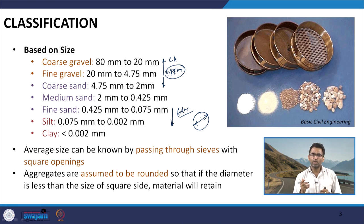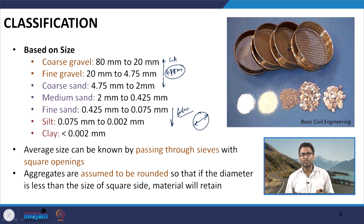Usually we describe sizes based on two sieves: a larger and the next standard size. For example, if we have a 20 mm sieve and the next standard is 12.5 mm, an aggregate passing 20 mm and retained on 12.5 mm has an approximate average size of (20 + 12.5) / 2. We describe aggregate size as 'passing x mm and retained on y mm.'